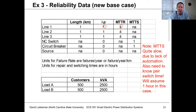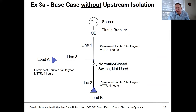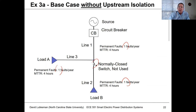The switching time of one hour is a large number, and to get it down we'd need automated switching, which we'll get to toward the end of this example. For the base case, we assume that even though the switch is there, it's not used. Based on the failure rate, we have one fault event per line section per year.